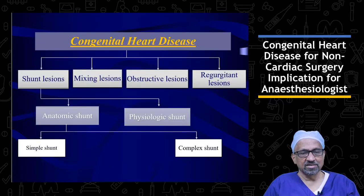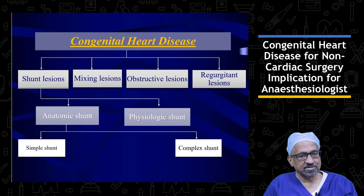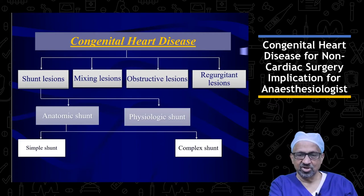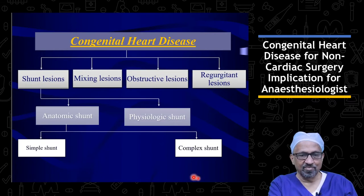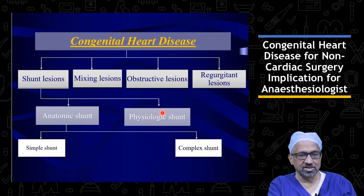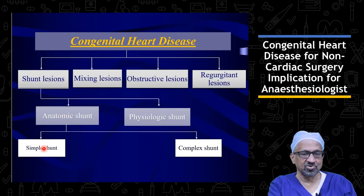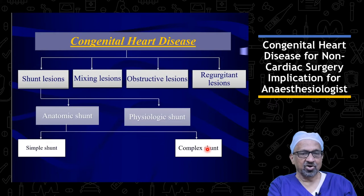Another way to classify congenital heart disease is into shunt lesions, mixed lesions, obstructive lesions, and regurgitant lesions. The shunt can be anatomic, where there is a structural connection between both sides of the heart, or physiological, where there is no such connection. The anatomic shunt can be a simple shunt with no obstructive component, or a complex shunt where the anatomic shunt is associated with an obstructive element.